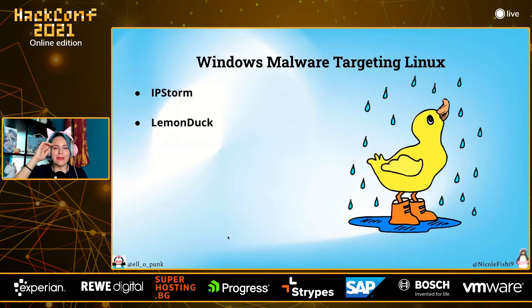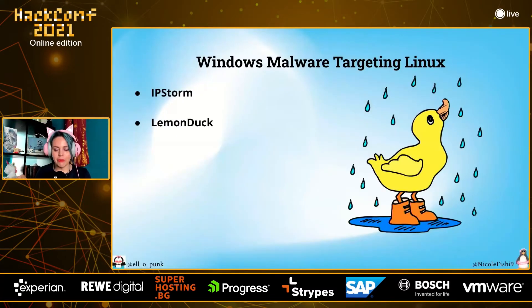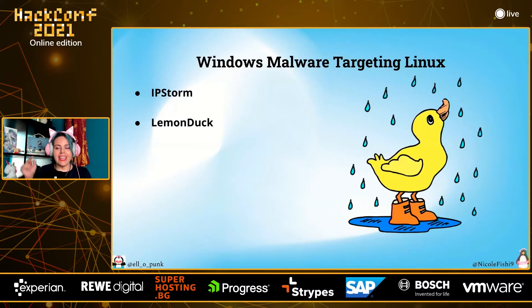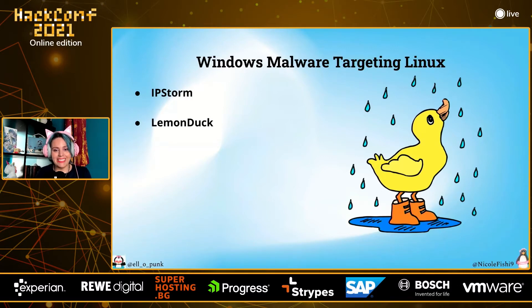Cloud Snooper is one of my favorite attacks to go over. There's a white paper on it written by Sophos — I'll make sure to link to it. What's important to note is that this rootkit was based on open-source code we already knew about, code that we knew how it behaved. Yet it was still able to get past traditional scanning, past traditional antivirus when it came to signatures or behavior. The fact that it was in the cloud didn't even impact it — it was written specifically to bypass cloud security methods.